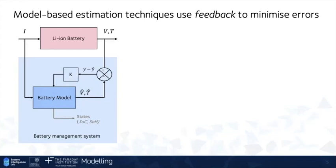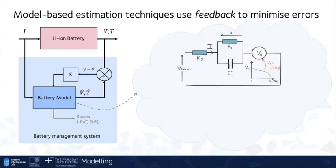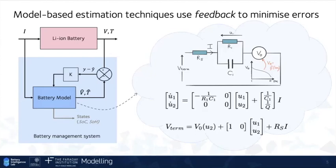Now we can put different kinds of models into the blue box, but the typical model is an equivalent circuit, which would look something like this. This is probably the simplest kind of equivalent circuit model. We don't have time to do a deep dive on this, but for those who are interested, these are the equations. This is a state space system. And just to point out that there are two states in this system, U1, which is the voltage over the RC pair, and U2, which is the state of charge.